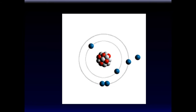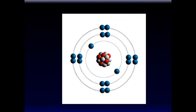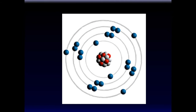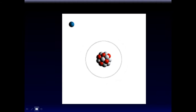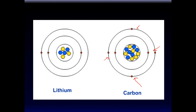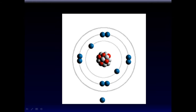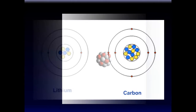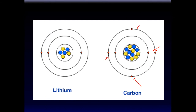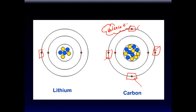Orbitals fill like this: two go in the first, eight in the second, eight in the third. The electrons on the outermost shell are called valence electrons, and the outermost shell is called the valence shell.